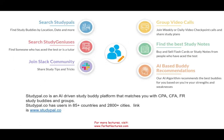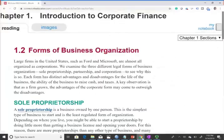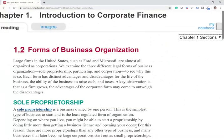Also if you're looking for a study buddy and you're studying for your CPA or CFA, you can check out studypal.co. It's an artificial intelligence driven study buddy platform that matches you with another individual. They have users in 85 countries and 2,800 cities in the U.S., from LA to New York. So let's go ahead and take a look at the forms of business organization.